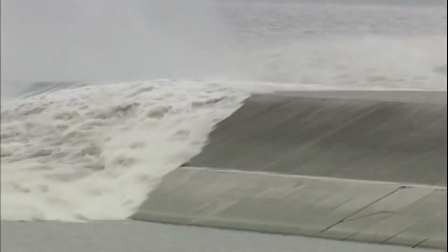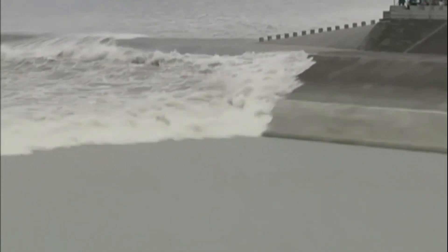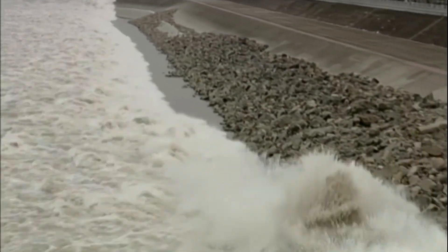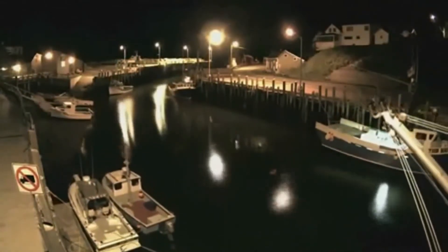The tide with the largest level changes in the world occurs in the Bay of Fundy in Nova Scotia, Canada. In that place the water level varies by up to 13 meters between high tide and low tide as you can see in this video.